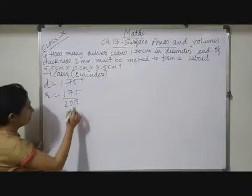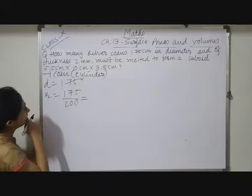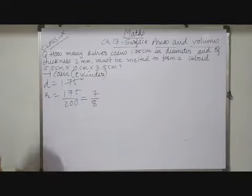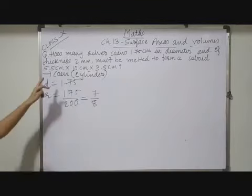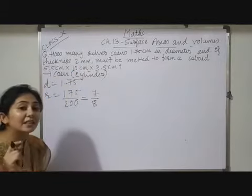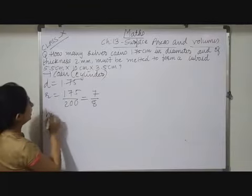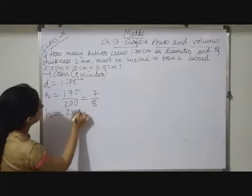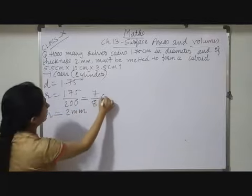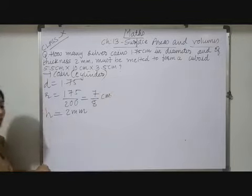Now see, of thickness 2 mm. Thickness given in mm, so thickness is nothing but height. So height is 2 mm and it is given in centimeter, so obviously mm you have to convert in term of centimeter.